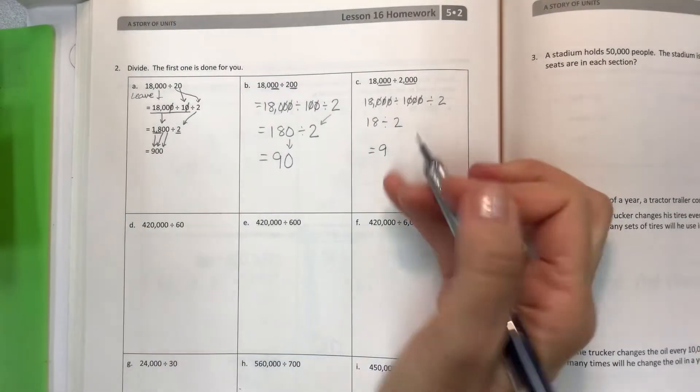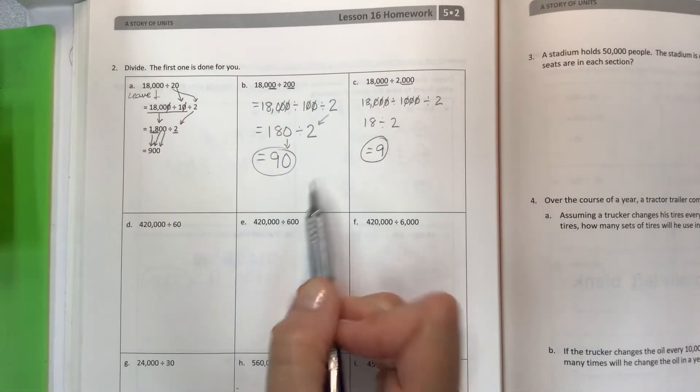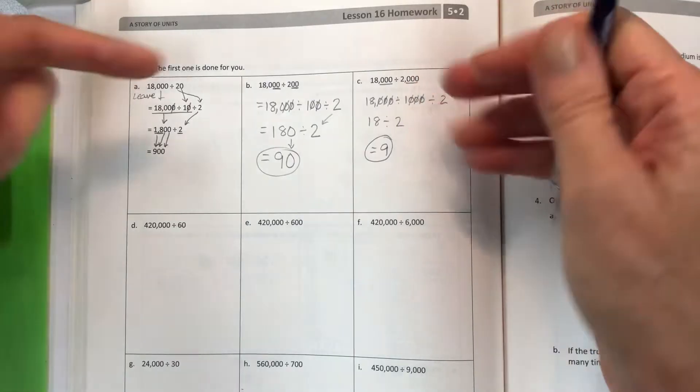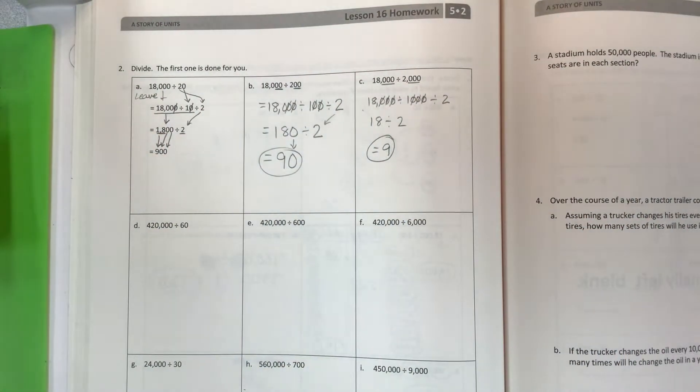You should have 90 for B and then 9 for C, because they're giving you bigger divisors each time, which means your answer is going to be a little bit simpler.